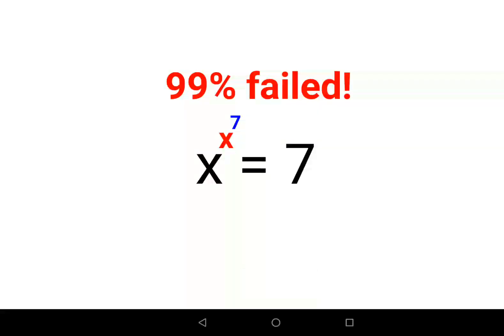Welcome everyone. So today we are going to solve a very nice indices problem where we have x raised to x raised to 7 is equals to 7. Now in this kind of scenario, how do we find the value of x?